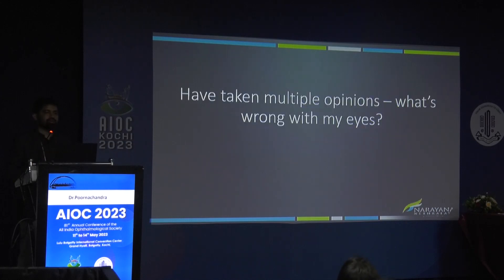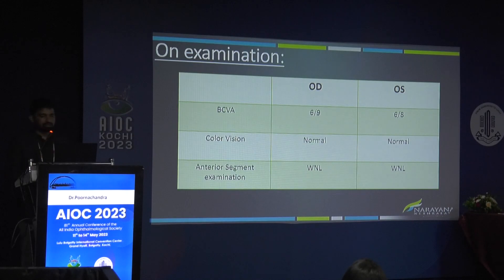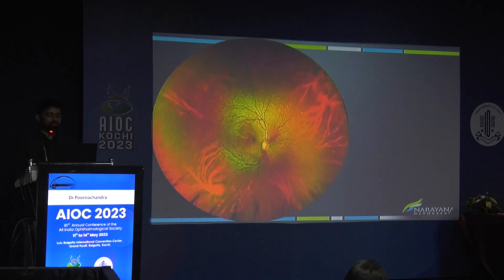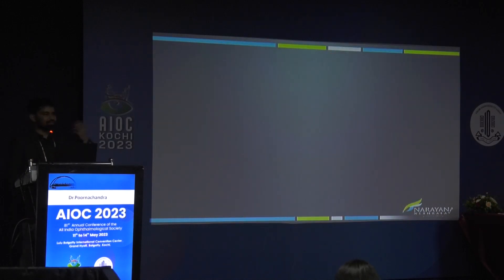One more scenario: patients who have taken multiple consultations but don't know what's happening, going from one consultant to another. A 25-year-old male presented with night vision problem, no positive family history, vision around 6/9–6/8, normal colour vision, normal anterior segment, born of a consanguineous marriage, with one sibling whose vision was normal. Looking at the fundus photograph, I was excited — miso phenomenon, night vision problem — I thought I was dealing with the CSNB group of disorders.